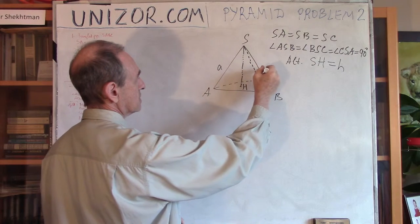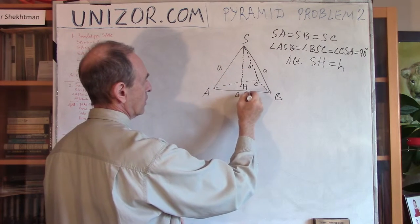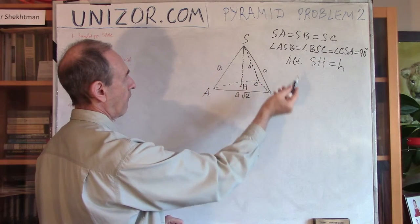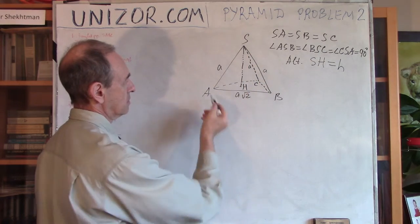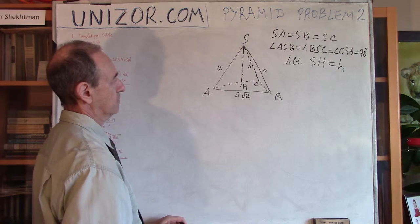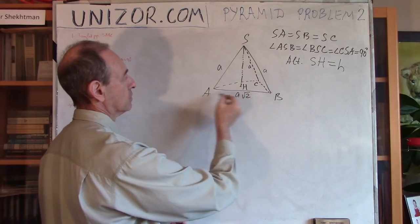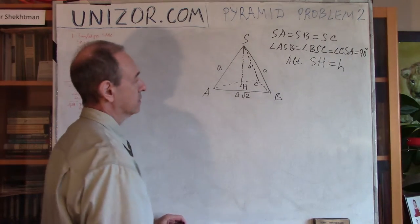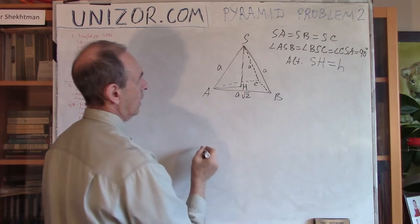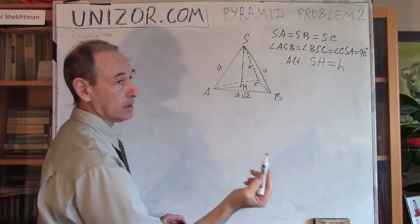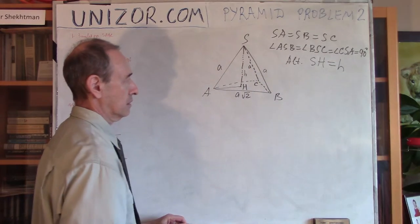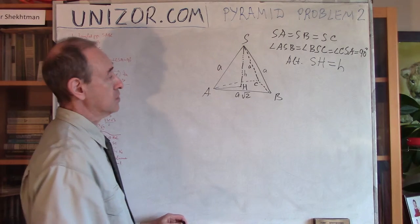Now, if each side edge is A, then the base edge AB is obviously A√2, according to the Pythagorean theorem. ASB is a right triangle, A and A are catheti, the angle at the top is a right angle. So A² + A² equals the hypotenuse squared, which means the hypotenuse is A√2. Now, if I have an equilateral triangle with a known side equal to A√2, I can find AH. And then from the right triangle SAH, knowing hypotenuse A and cathetus AH, I will determine the altitude and equate it to H. That would be my equation.